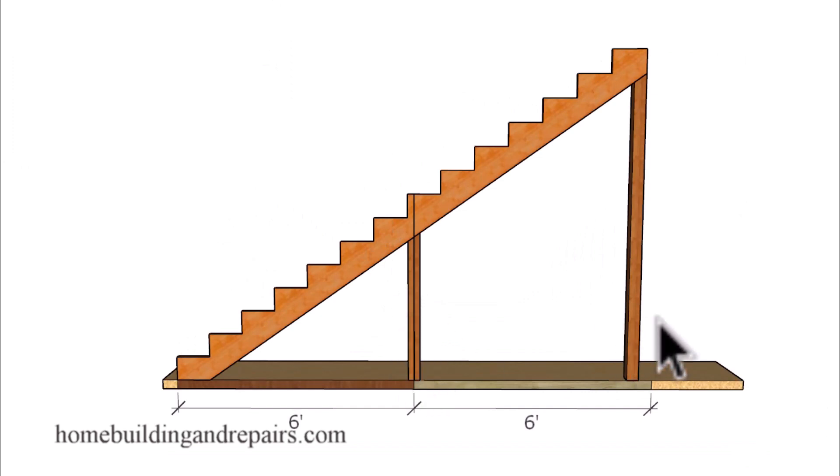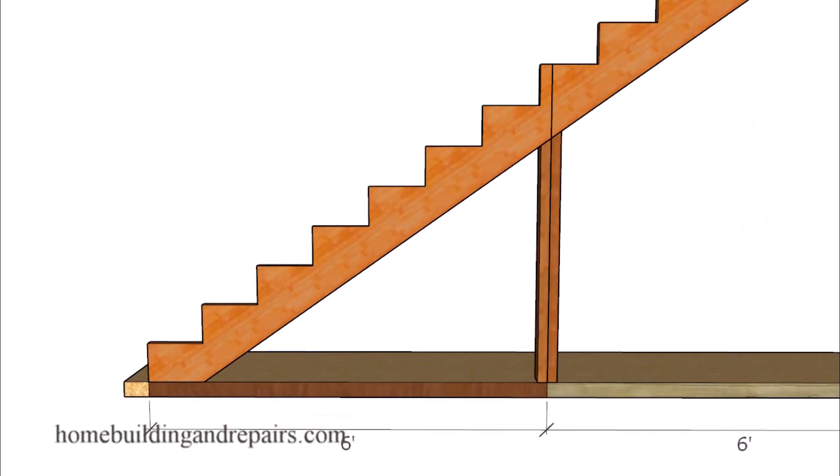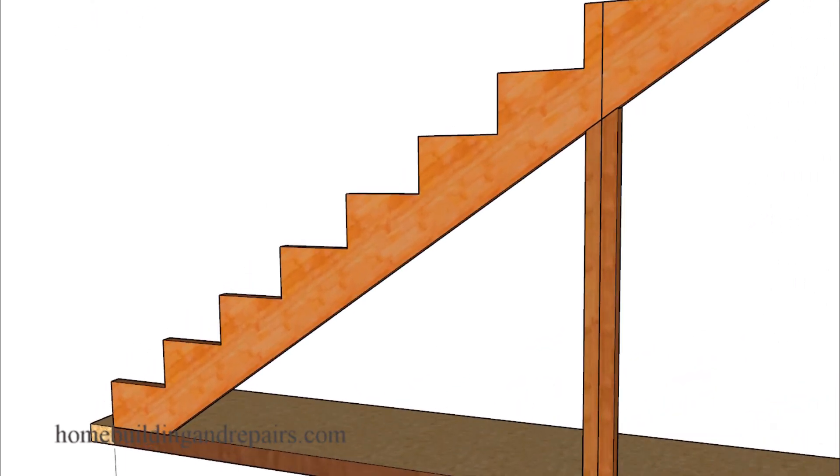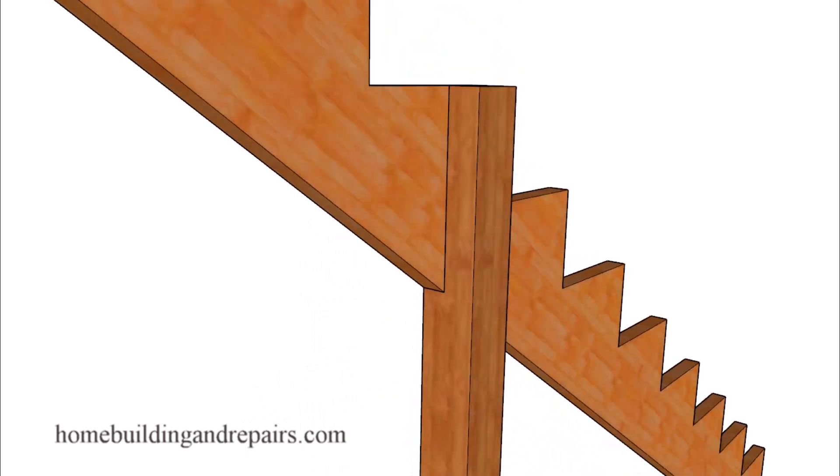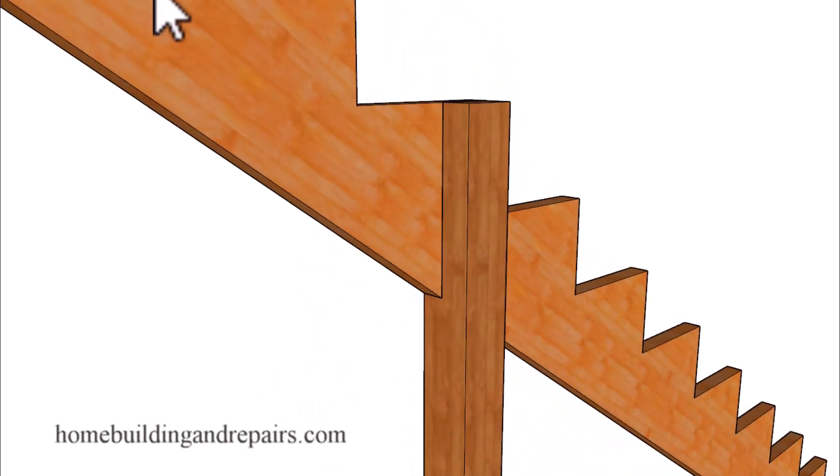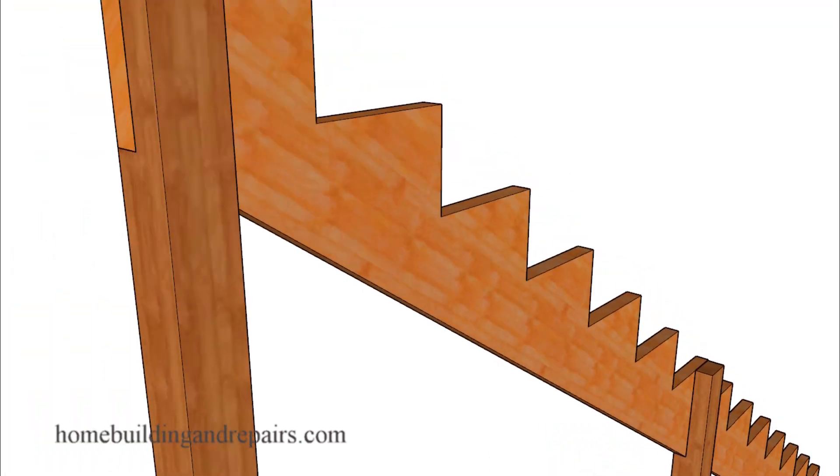And that might look something like this. Again the maximum measurement is going to be six feet and you would just simply space the post out accordingly. Now they also do call for the post to be notched and have two half inch bolts going through them with washers. I'll provide you with an example of that here in a little bit.